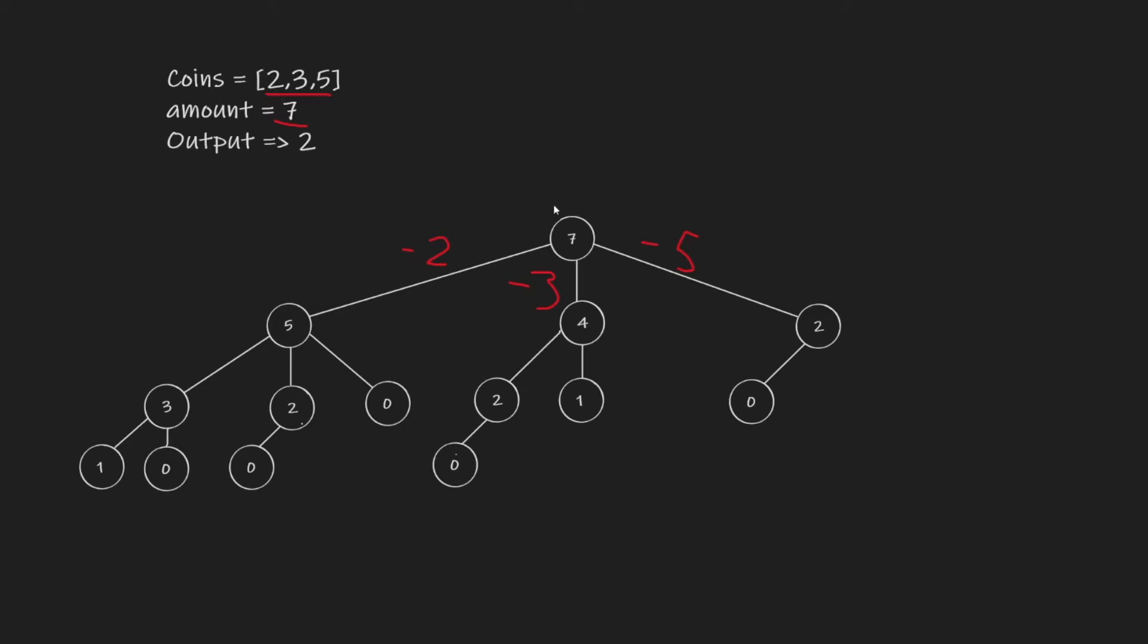Without walking through the whole problem, we can see that the path that gives us the least amount of coins used is over here, where we use two cents and then five cents to make change for seven, and over here when we take five cents and two cents.